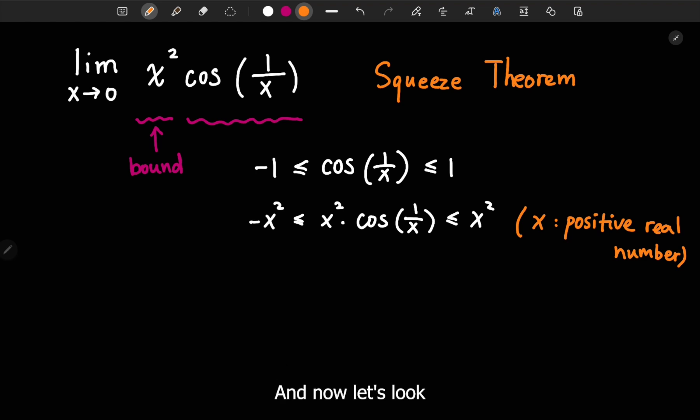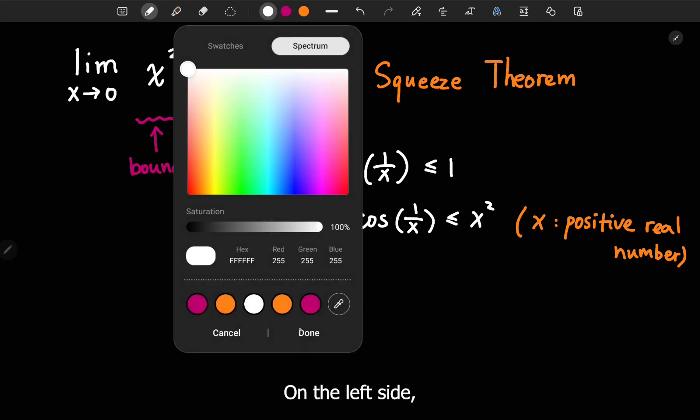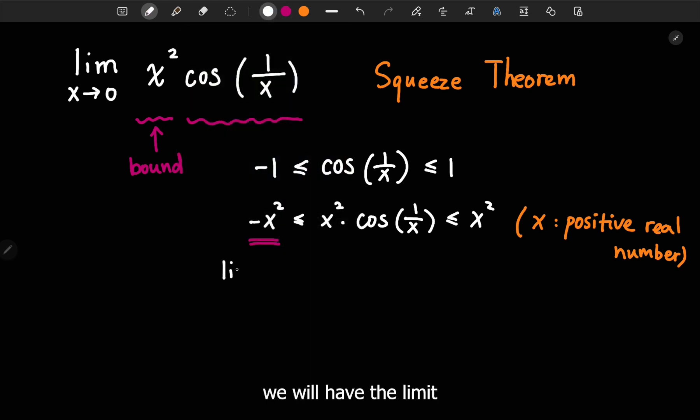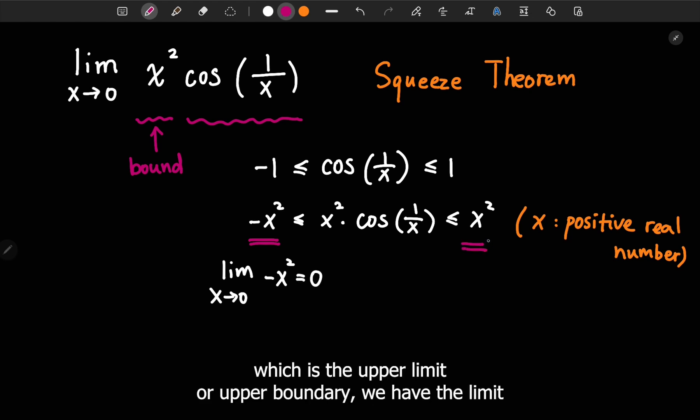And now let's look at the bounding terms for this function. On the left side, we will have the limit as x goes to 0, negative x squared. So that will give us 0. And on the right side, which is the upper boundary, we have the limit of x squared as x approaches 0, which also gives us 0.